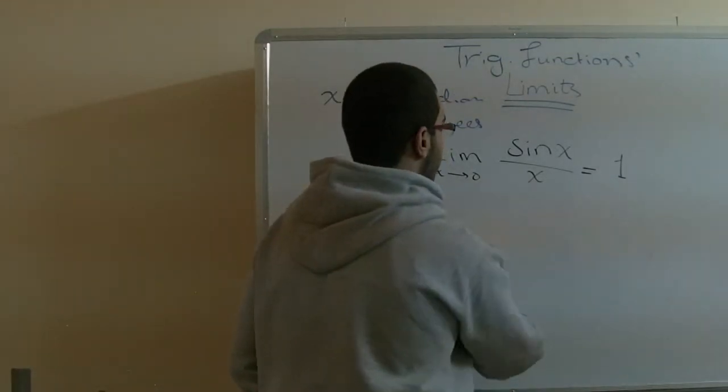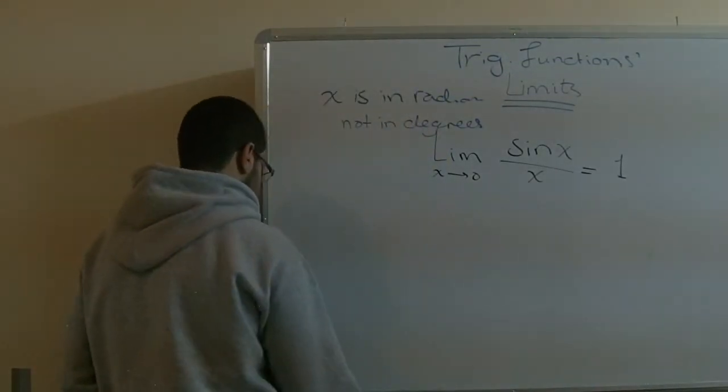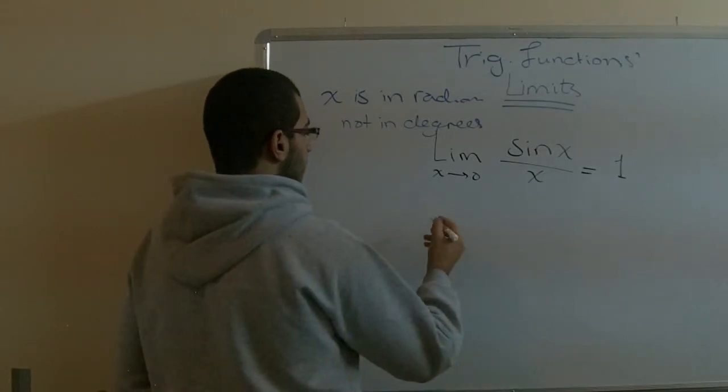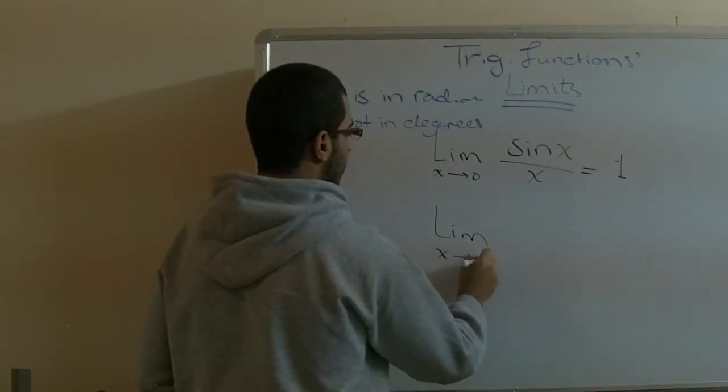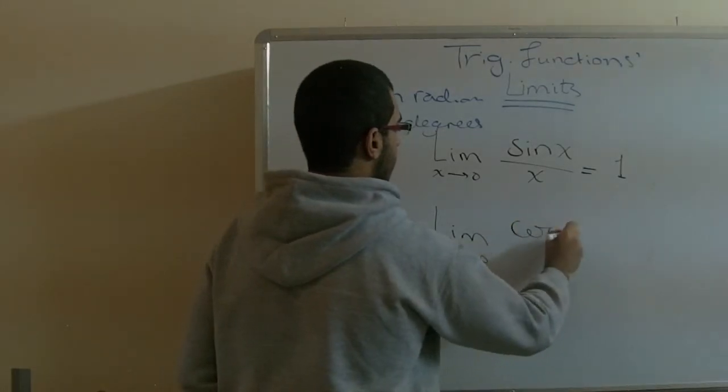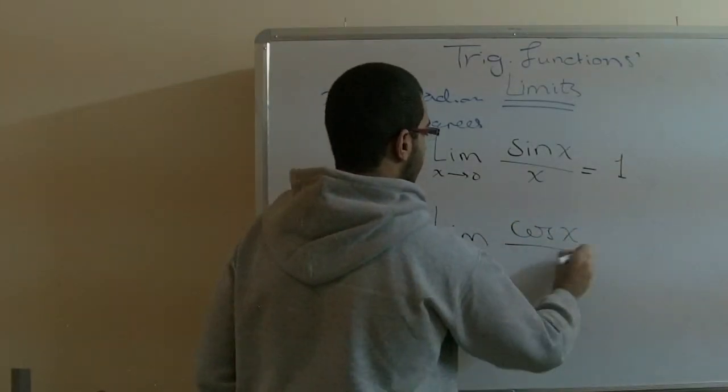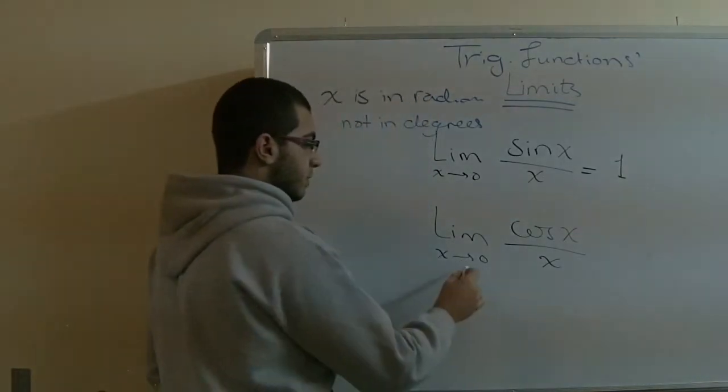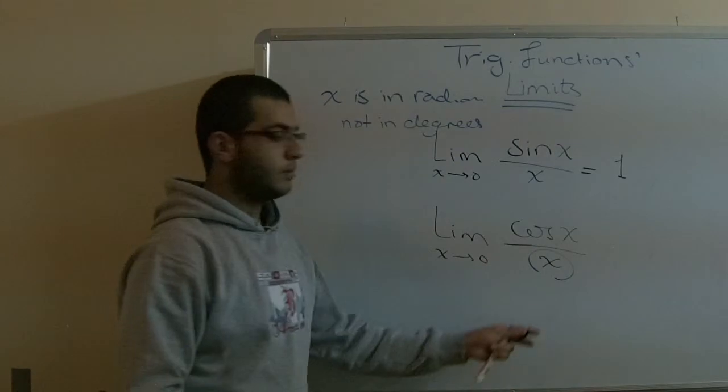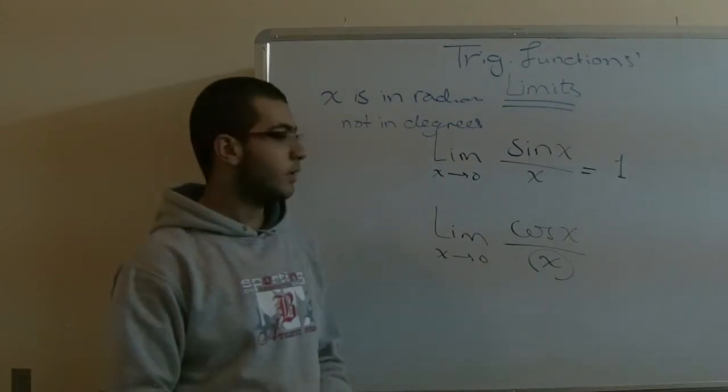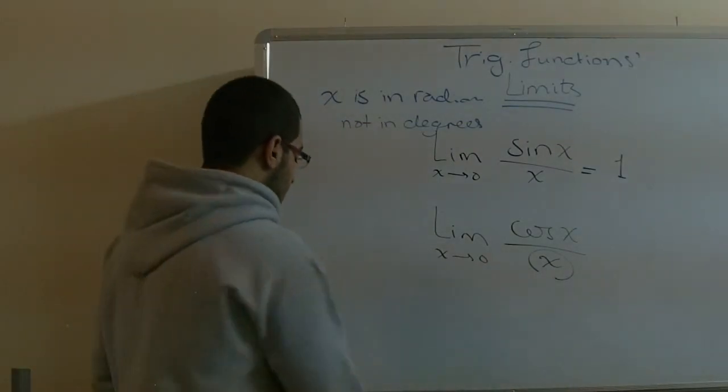So somebody may ask, what about the cosine? If we say the limit of x approaching zero, cosine x over x, this is undefined because the denominator is zero and we cannot put the denominator with zero, so this doesn't work.